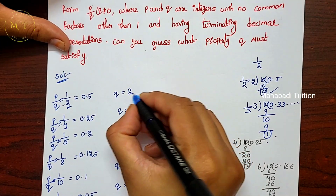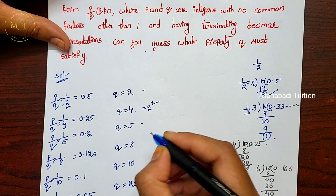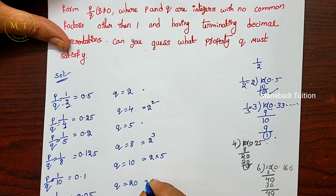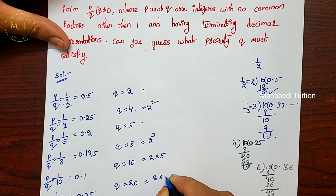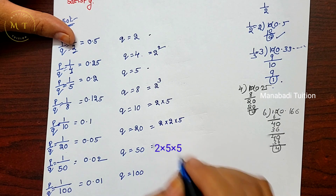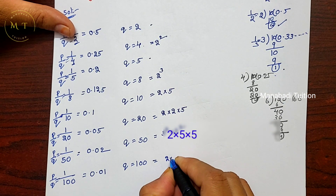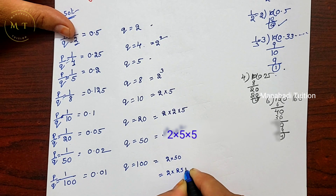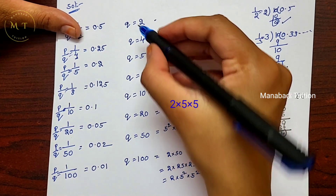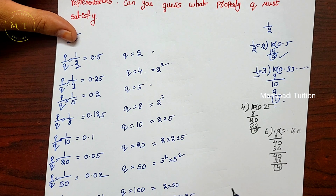Let's write these in prime factorization form: q = 2; q = 4 = 2²; q = 5; q = 8 = 2³; q = 10 = 2 × 5; q = 20 = 2² × 5; q = 50 = 2 × 5²; q = 100 = 2² × 5². So all denominators are made only of the prime factors 2 and 5.